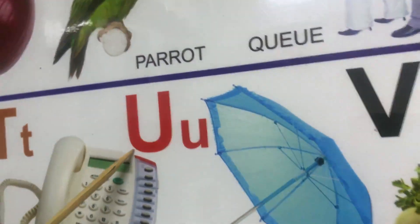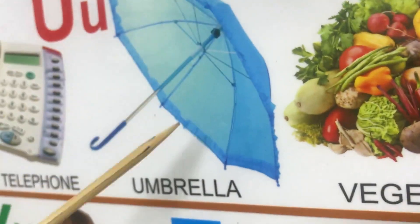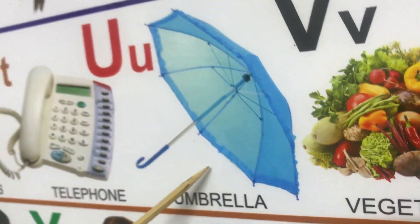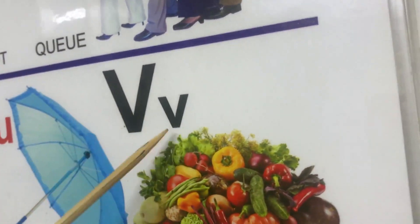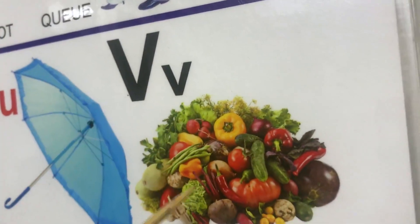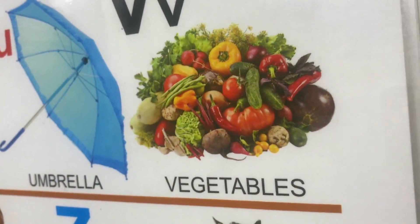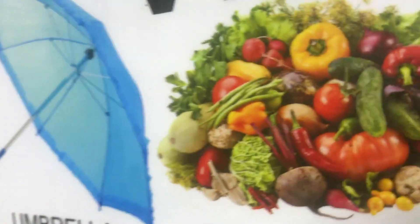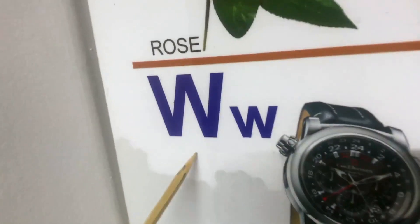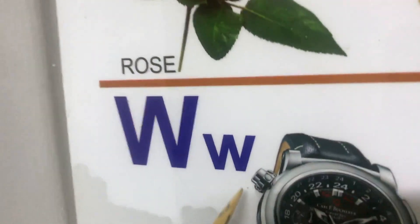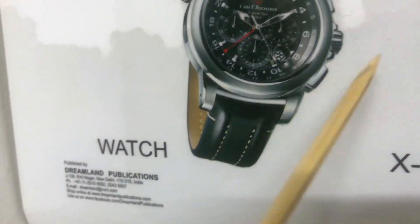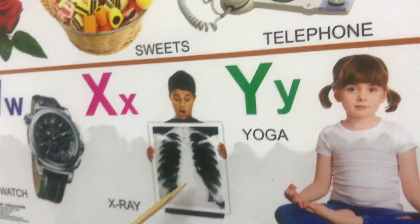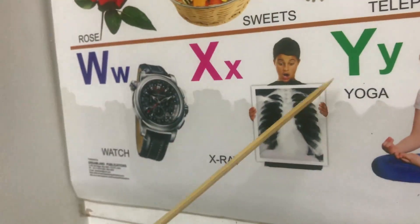Capital U, small u. U for umbrella. Capital V, small v. V for vegetables. Capital W, small w. W for watch. Capital X, small x. X for x-ray.